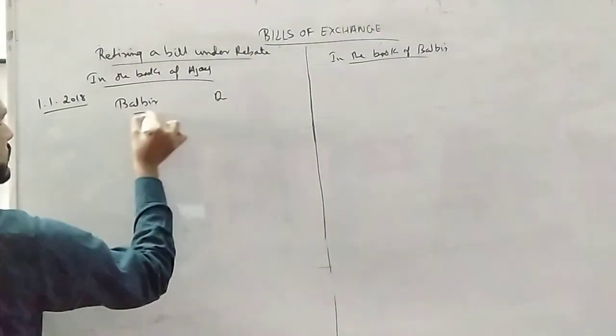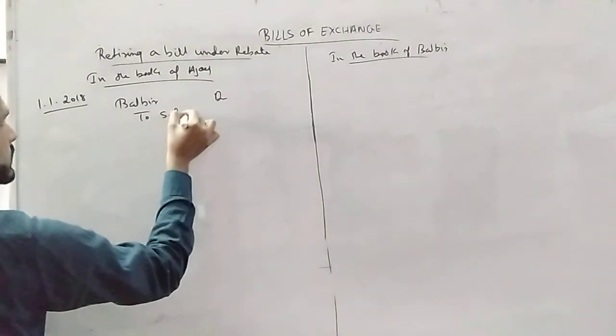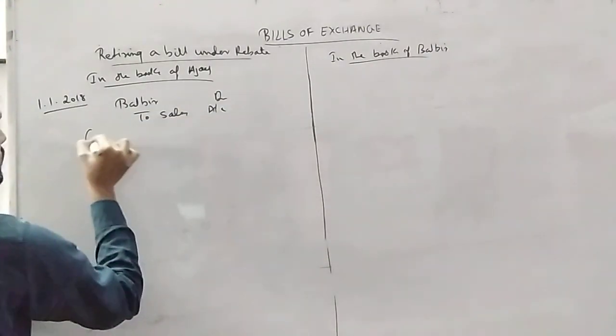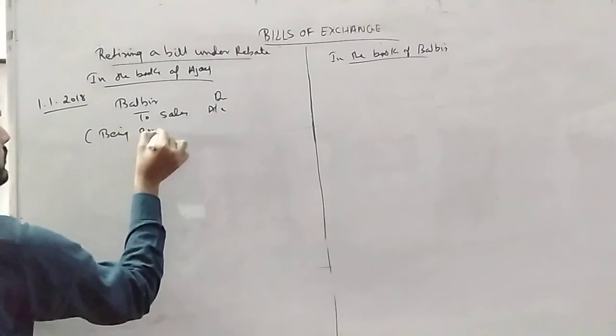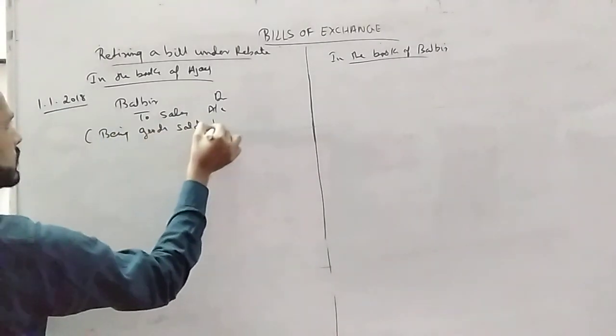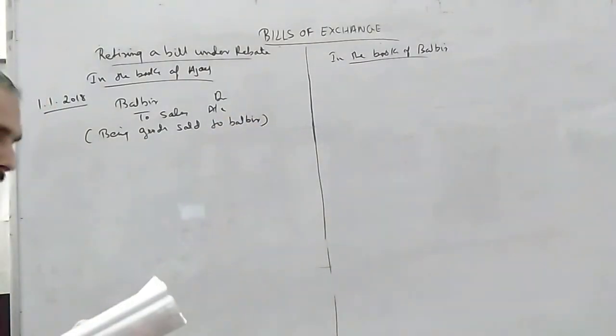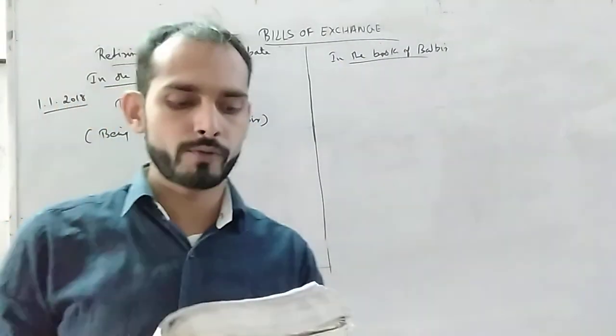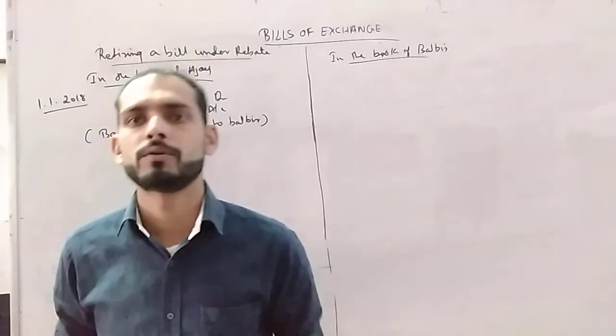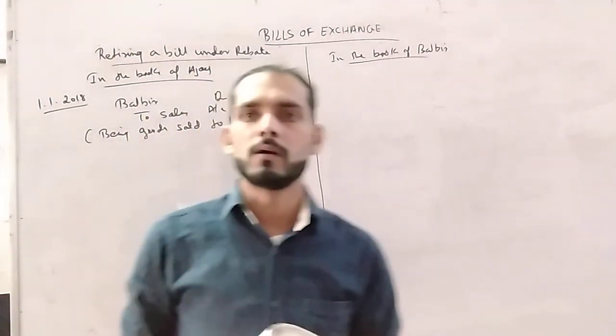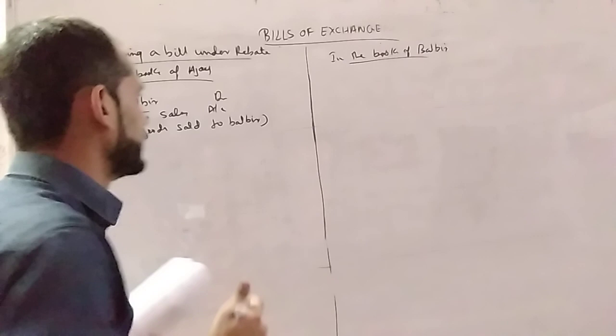Balbir debited to Sales Account. Goods sold to Balbir. In the books, we have $10,000, which is 20% discount. $10,000 minus $2,000 is $8,000. The goods sold to Balbir, $8,000.